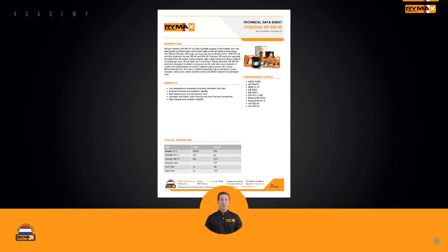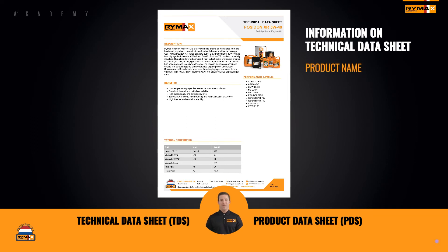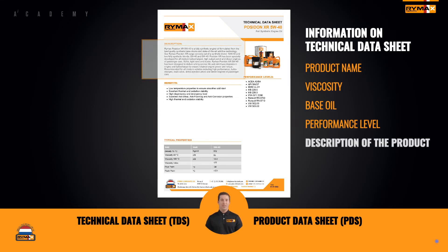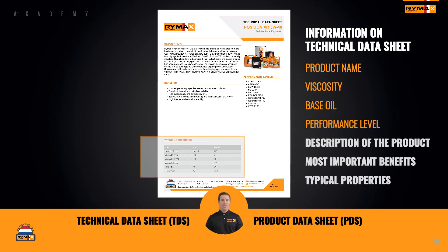Now let's have a look at an important document for your lubricant — the product data sheet. On a product data sheet, also called technical data sheet, you will find similar information as on the label, like product name, the viscosity, the type of base oil, and the performance level. Additionally, you will find on the TDS a description of the product, telling what the oil is meant for and the most important benefits of the product. Finally, the typical properties are listed on the TDS, which is a selection of important specifications of the product.